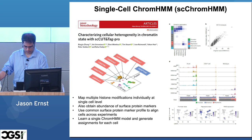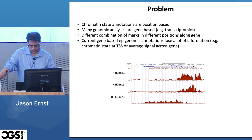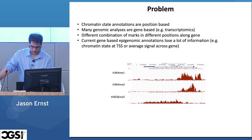Now to briefly talk about some more recent work. These chromatin states are position-based, but for many genomic analyses such as transcriptomics, people tend to focus on genes. When you look across genes, you see different combinations of marks — in the promoter region you have a certain set of marks, and along the gene body a different set. People might just focus on the chromatin state at the TSS or average all signal across marks, but either approach loses a lot of information.